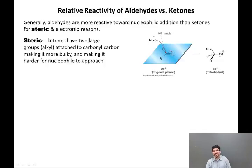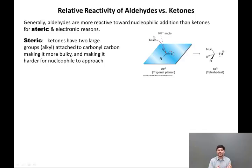What do I mean by steric effects? Ketones have two large groups — they're alkyl groups — so by definition they're going to be larger than a hydrogen attached to the carbonyl carbon. Therefore, the atom at which the nucleophile has to attack, namely the carbonyl carbon, is more sterically hindered by these bulky R groups, and it is harder for the nucleophile to approach.